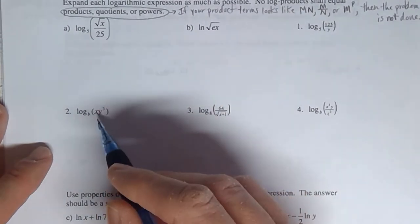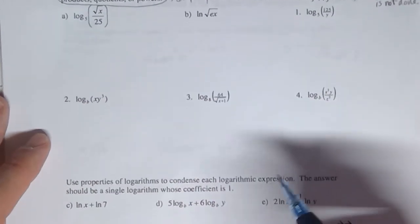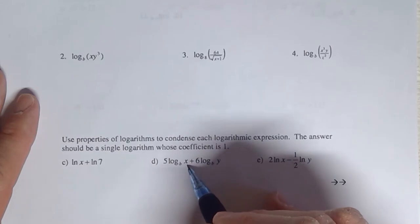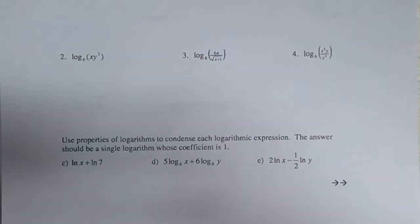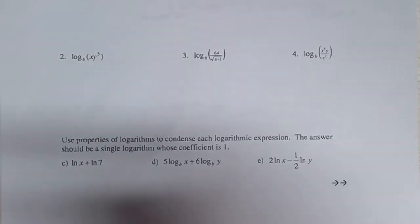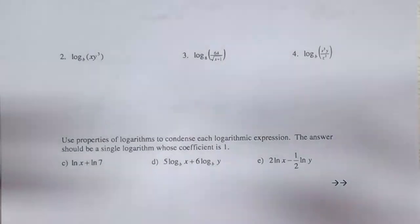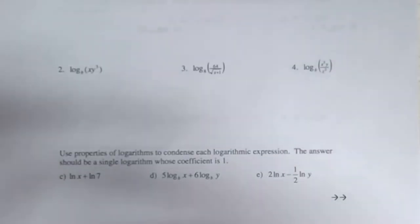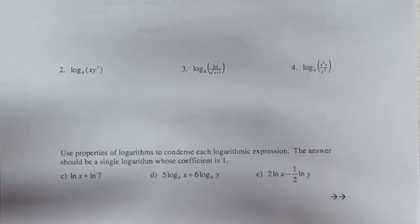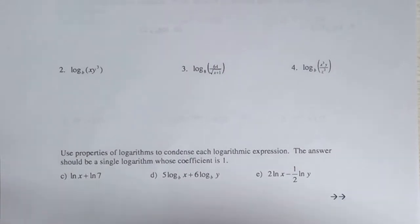For example, a mistake a lot of students make is they'll see an X and pull it out in front of the logarithm, or if there's already something like a five in front, they'll try to move it into the product term — because that's similar to what we did with greatest common factor and factoring. I really need you to only do things we learned in regards to logarithms, which is from sections 9.3 to 9.6.